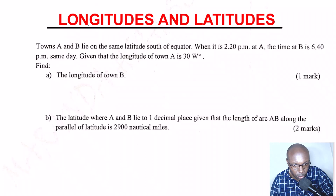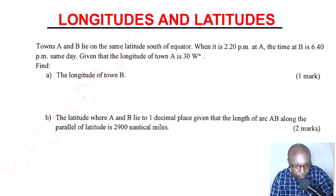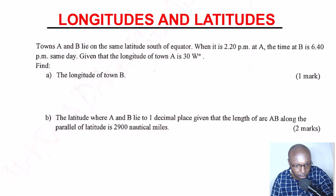Given that the longitude of town A is 30 degrees west, find: part A, the longitude of town B. Then part B of the question, the latitude where A and B lie to one decimal place, given that the length of arc AB along the parallel of latitude is 2,900 nautical miles.